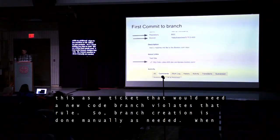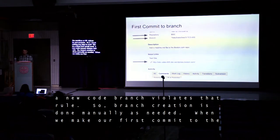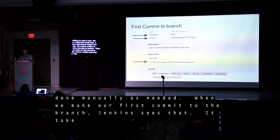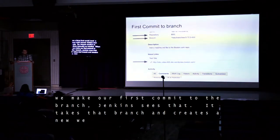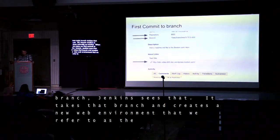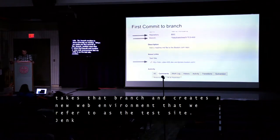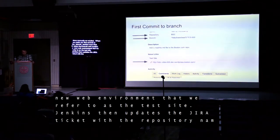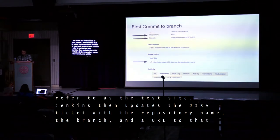When we make our first commit to the branch, Jenkins sees that. It takes that branch and creates a new web environment that we refer to as the test site. Jenkins then updates the Jira ticket with the repository name, the branch, and the URL to that test site.